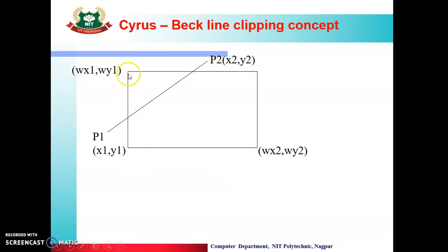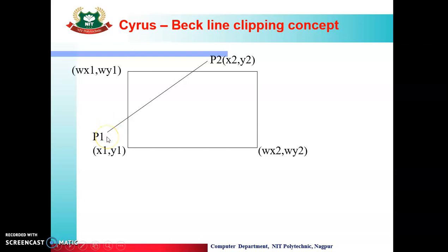We are given a screen and an object. In this example, this is the screen, and we will read the coordinates or corners of the screen, that is wx1, wy1 and wx2, wy2. Then we are given some graphical object or image. The portion that falls inside the window will be displayed, and the portion that is outside the window will be clipped.